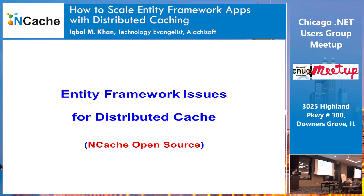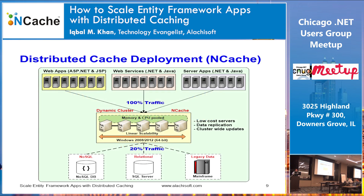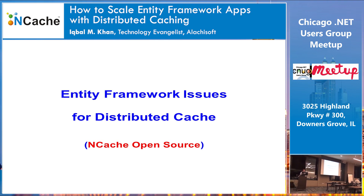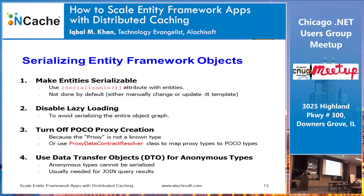Let's now get into Entity Framework — specifically EF6, not EF Core. If you decide to use a distributed cache with your EF application, the most important thing to note is that it is an out-of-process cache. The entire cache does not exist within your application process. Because it is distributed, it has to be out of process. When you have to store an object into it, the object has to go through serialization — that's the elephant in the room.